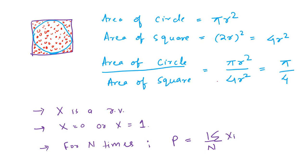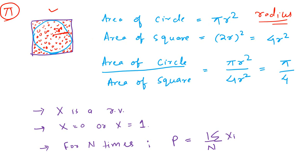Before that, we'll try to understand this concept. Here is a square and there is a circle inscribed inside this square, and we need to find out the value of pi. We know that the area of the circle is pi r squared, where r is the radius of the circle — the distance from the center to the edge of the circle. Now if you join across, your diameter is nothing but the length of each side of the square. So if the radius is r, your diameter is 2r.